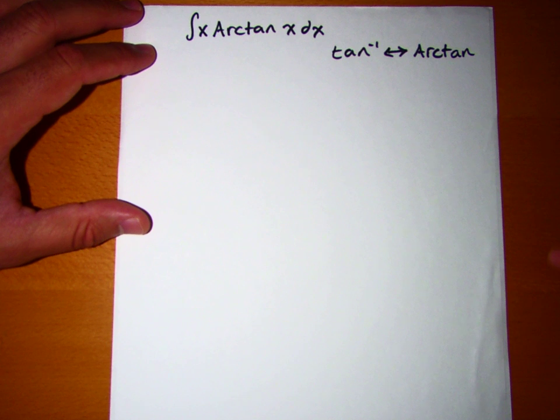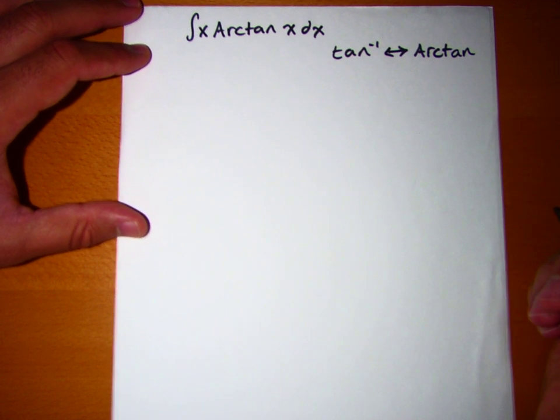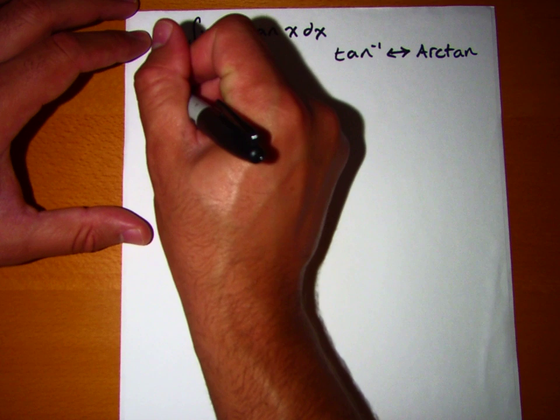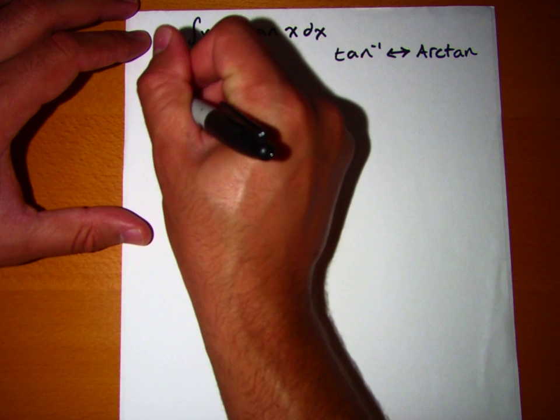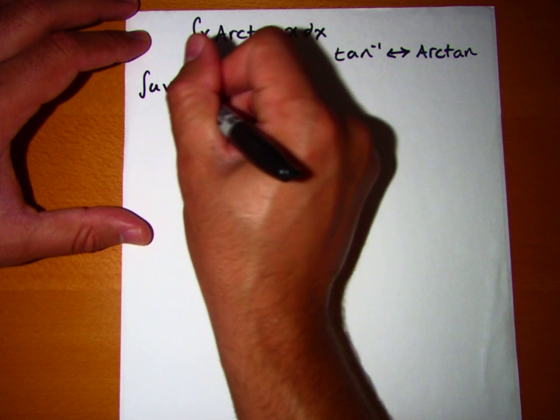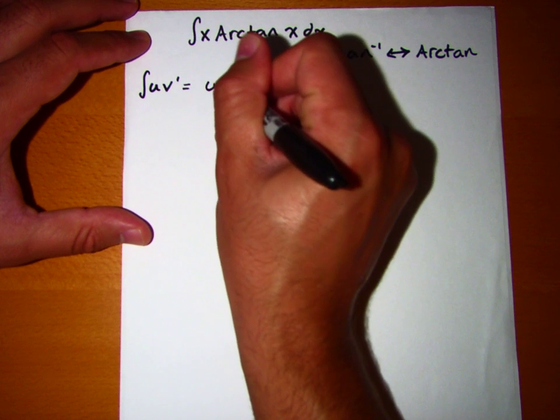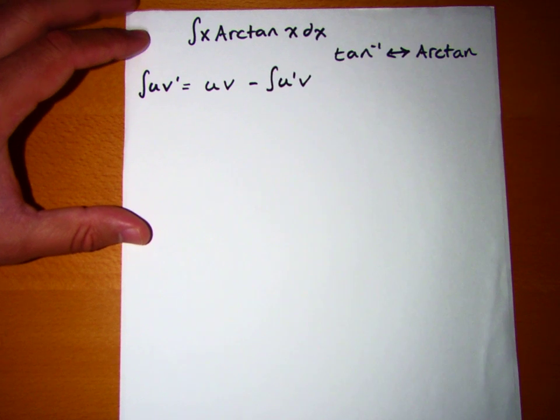But anyway, moving on, to solve something like this, the first thing that comes to mind is integration by parts, and if you recall, integration by parts says if you've got two functions u and v, that the integral of u v' is equal to u times v minus the integral of u' times v.